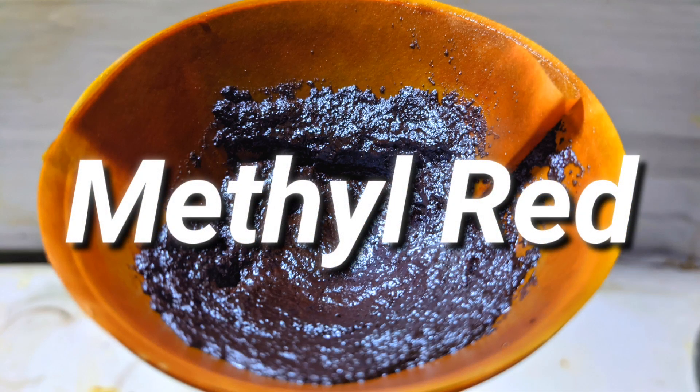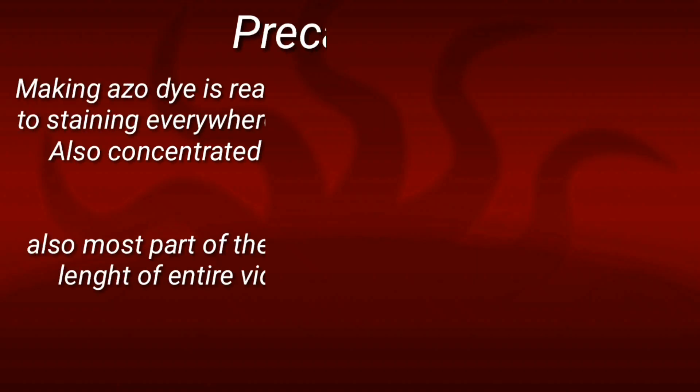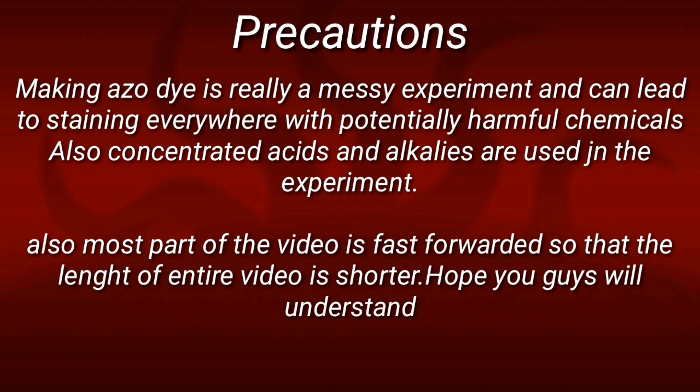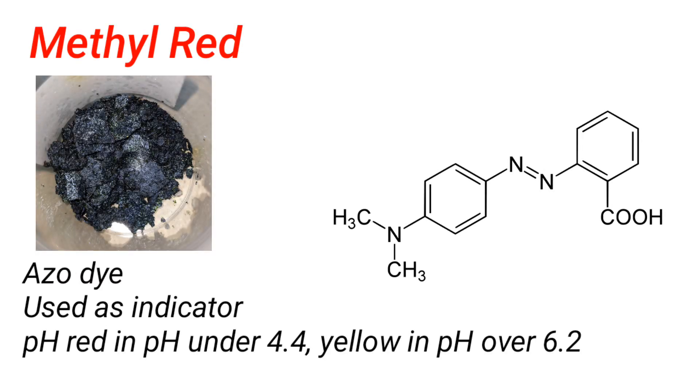Hello friends, in this video we will be making the azo dye methyl red. Methyl red is an azo dye that is widely used as an indicator in chemistry. It has a color of red in pH under 4.4 and yellow in pH over 6.2.